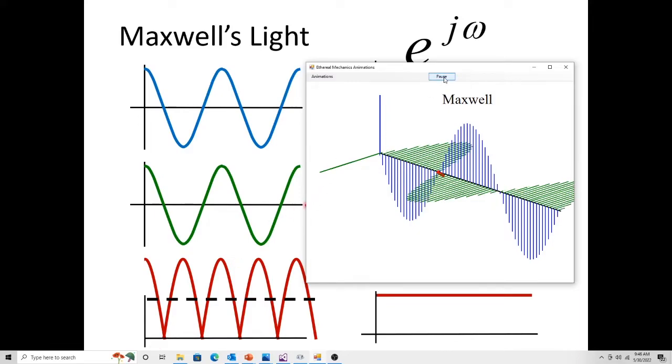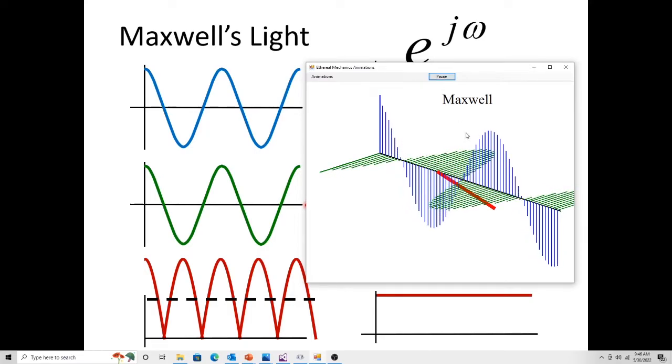And then as it propagates further, when you get to the peak of a lobe, like right there, now this is showing direction. This is just raw magnitude. So now you have the peak of the energy in the wave right here.